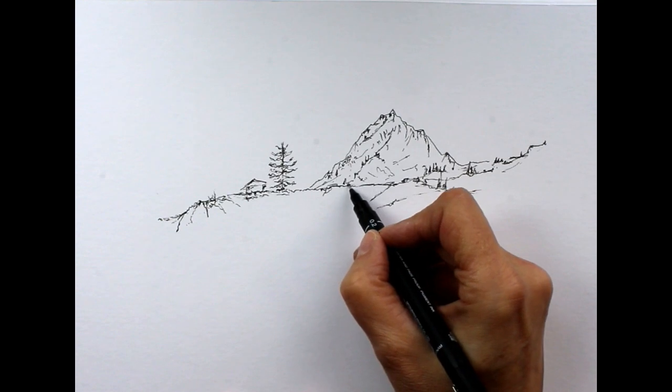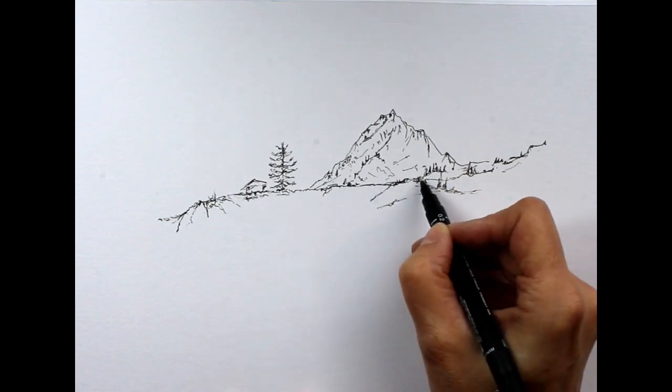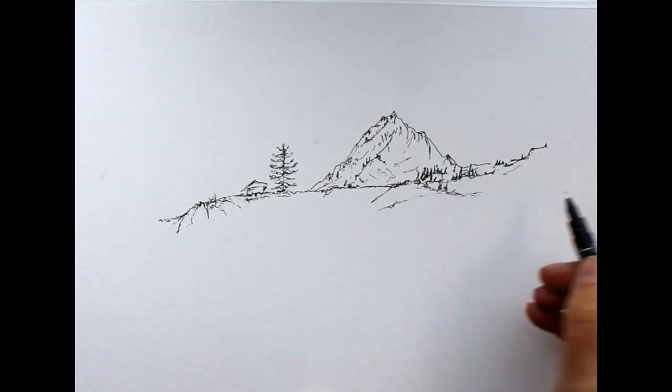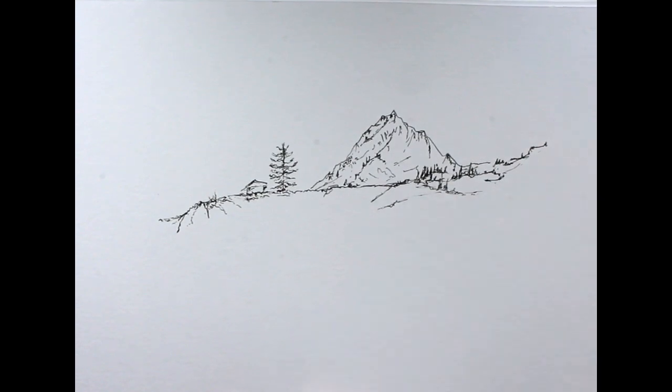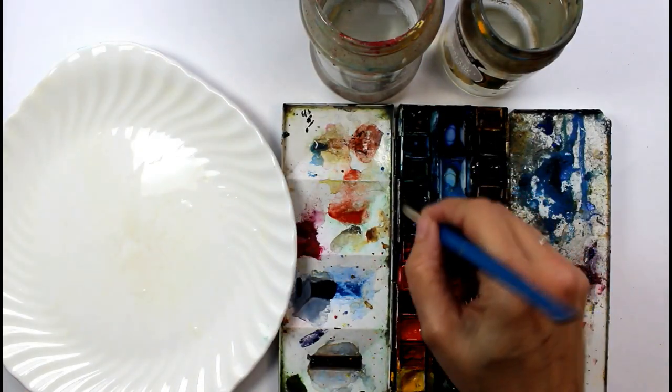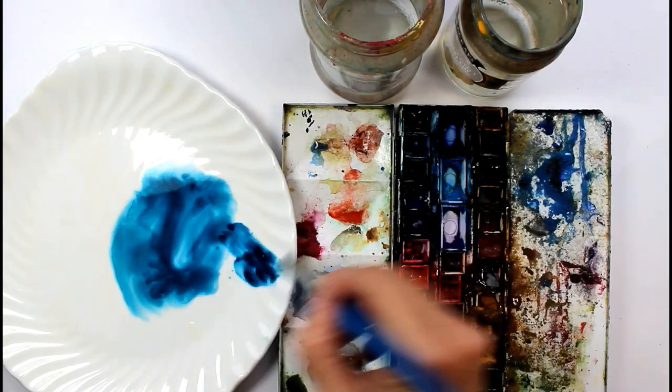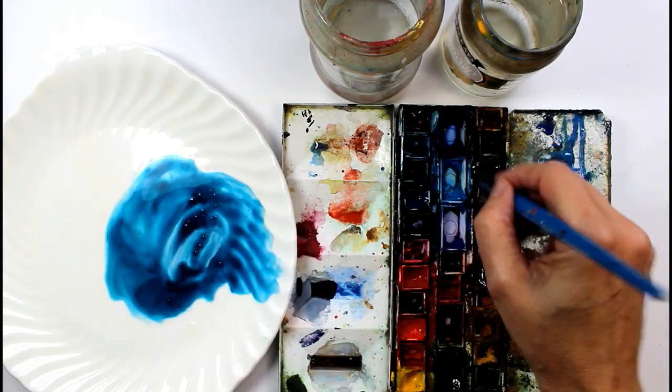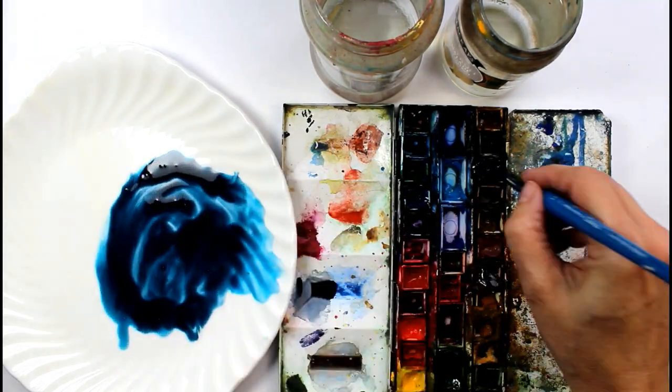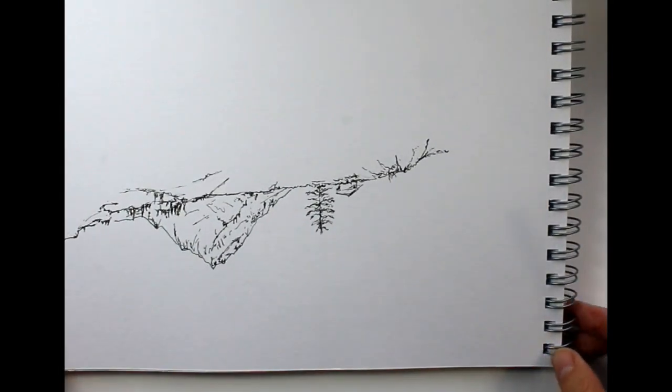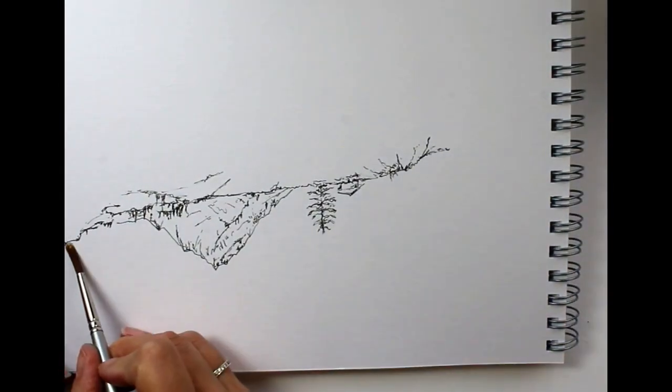Once you're happy with your drawing, pop that to one side while you come and mix your colors. The colors that I'm using are Phthalo Turquoise and Payne's Grey. You don't have to use these, you could use whatever you like. You could mix a black with a blue, have a look at the different blues that you've got on your palette and have a bit of an experiment. But make it nice and thick, don't use too much water, plenty of pigment in there to make it a nice rich dark blue.